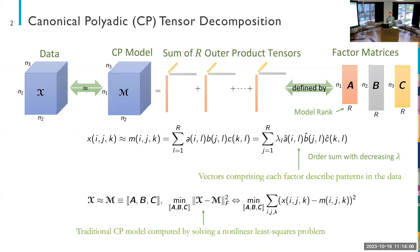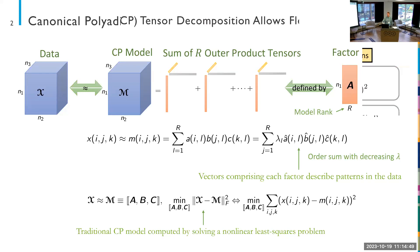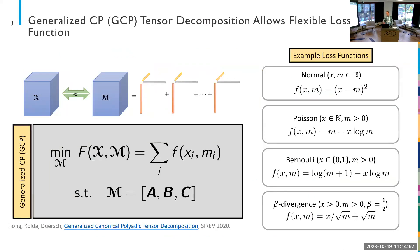We're focusing on CPD decompositions in this work. The standard traditional CPD decomposition solves a least-squares problem given by the sum of squares of differences between the tensor and the low-rank model. But we're not focusing on this particular form — there's the generalized CP method that Tammy Kolda and others developed, which generalizes to an arbitrary loss function F. You can derive that least-squares problem if you assume the difference is driven by Gaussian noise, which in many situations is not appropriate. For count data, for example, you might use Poisson.